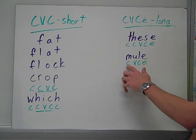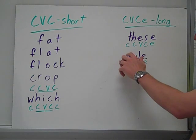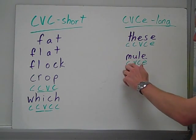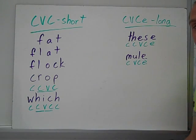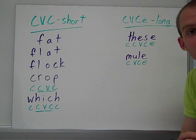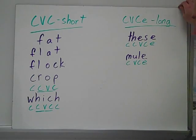Or, mule. Again, consonant, vowel, consonant, e. M, u, l, e. Consonant, consonant, vowel, e. E makes the u say mu, u, u, like the long u in mule.